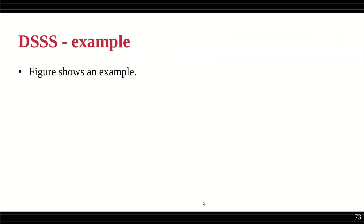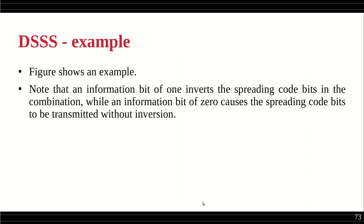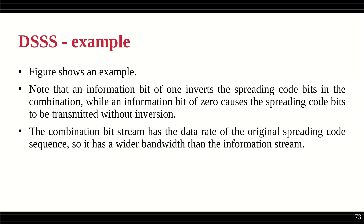The figure shows this example. An information bit of 1 inverts the spreading code bits in the combination, while an information bit of 0 causes the spreading bits to be transmitted without any inversion. The combination of the bit stream has the data rate of the spreading code sequence, so it has a wider bandwidth than the information stream.